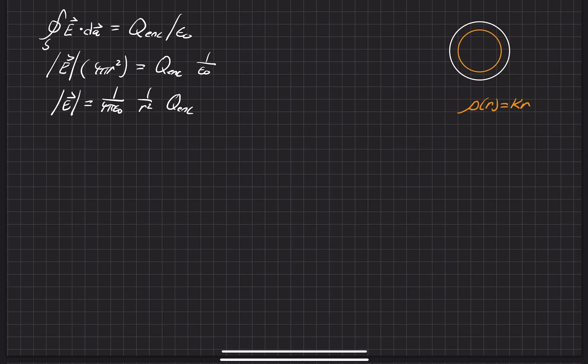All right, so the next step is trying to find the q enclosed. It's not as easy as what we had before, because we can't simply just multiply rho times v, because rho is a function of r. So if we just did rho times v, we would just be finding the charge density at that specific cross-section, that sliver of volume right there. So what we actually need to do, and this was kind of hinted at in the problem,